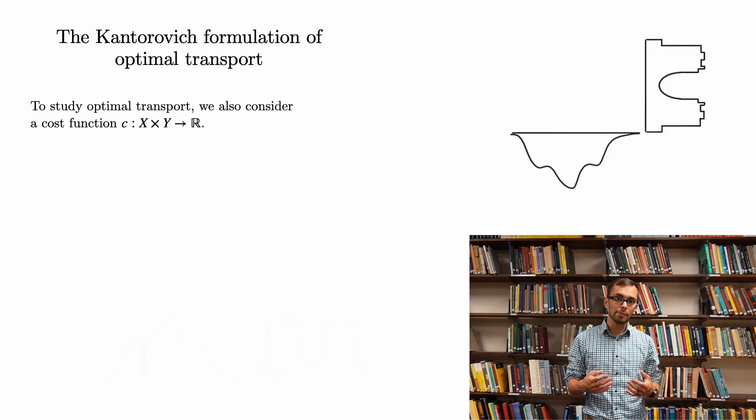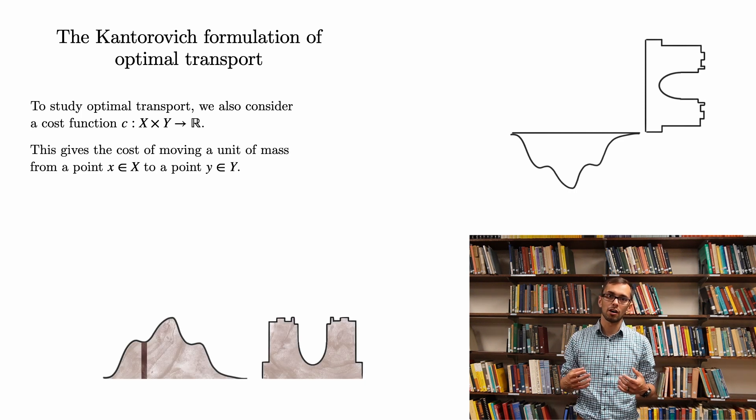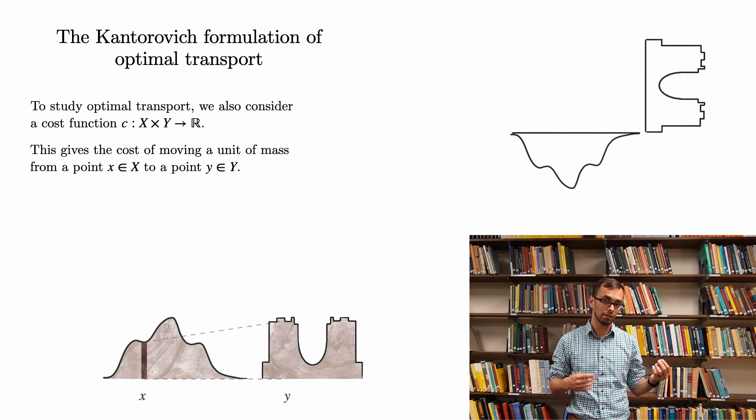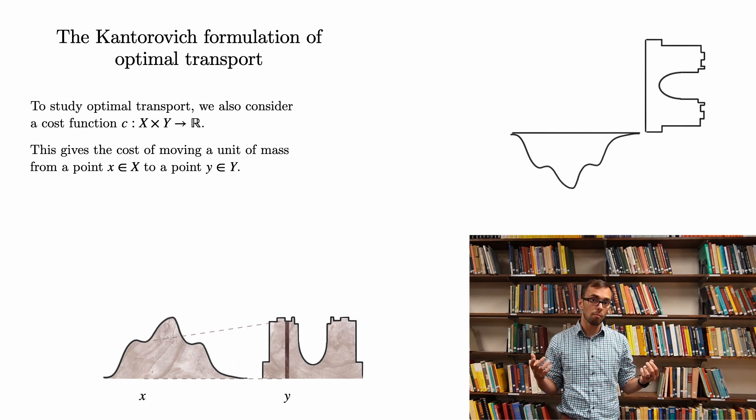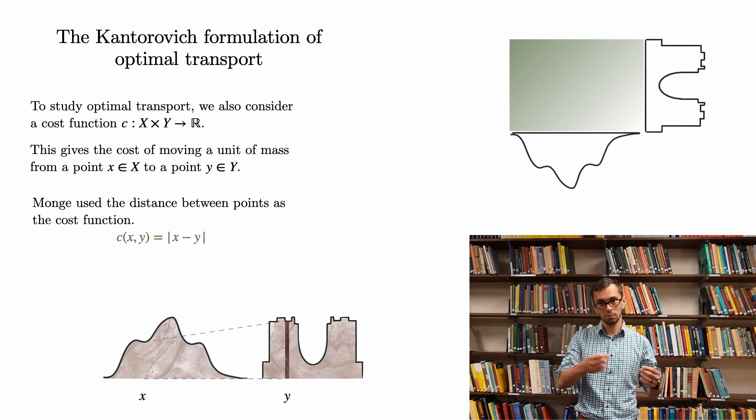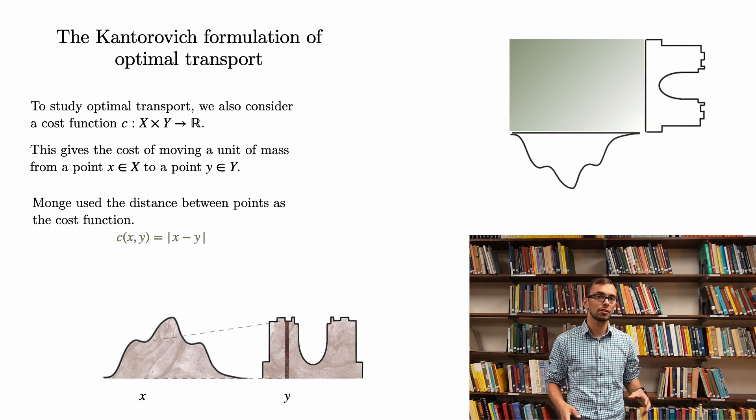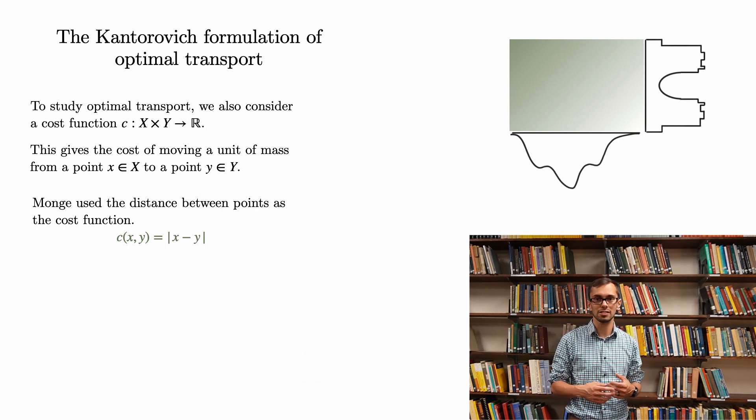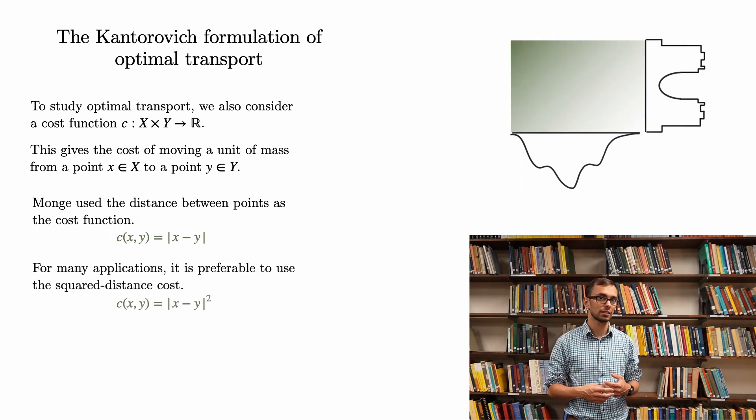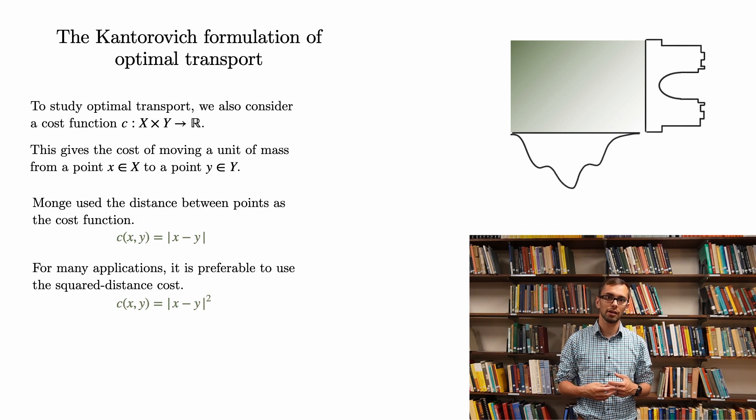In order to discuss optimal transport, we also need a cost function, which is the cost of moving mass from a point in the stone pile to a point in the castle. Monge supposed that the cost of moving a unit of mass from x to y is the distance between x and y. However, for many applications, it's preferable to use the square distance cost instead, and this is what we'll do for most of this talk.